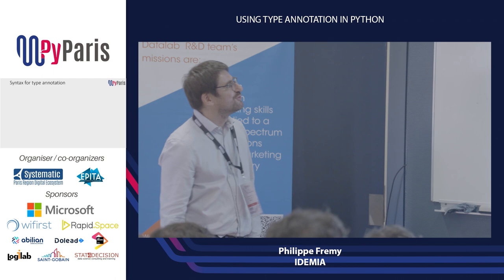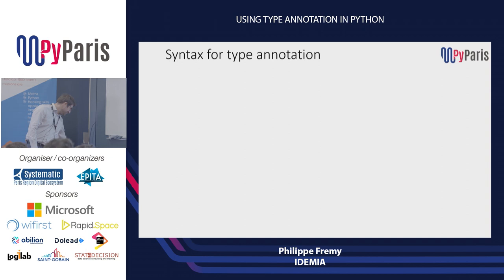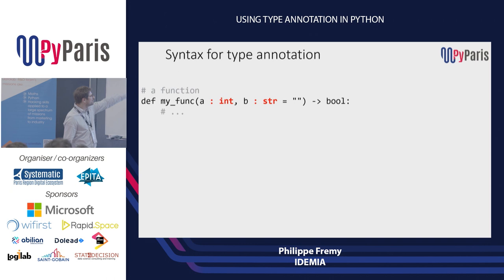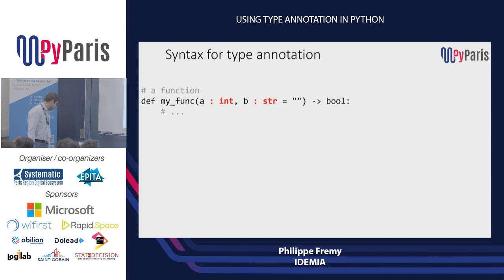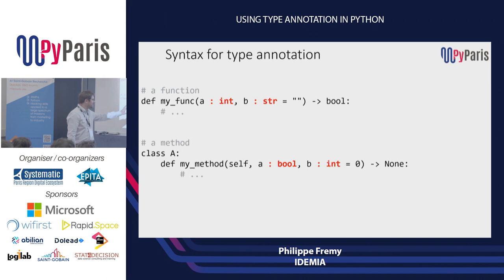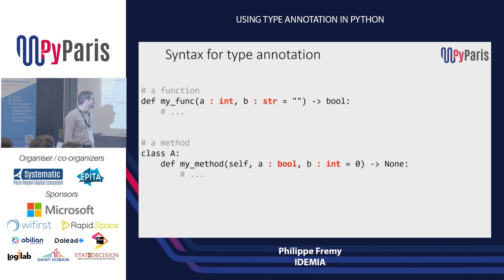What does the syntax look like? It's quite straightforward. You have your function, the argument name as usual, then a colon and you describe the type — in this case, an integer. If you have a default value, you need to put the annotation before the default value: argument name, colon, type description, equals, default value. On the return value, you put an arrow, specify the type of the return value, and then the colon. If you work with a method, it's exactly the same, except that you don't have to type annotate 'self'.